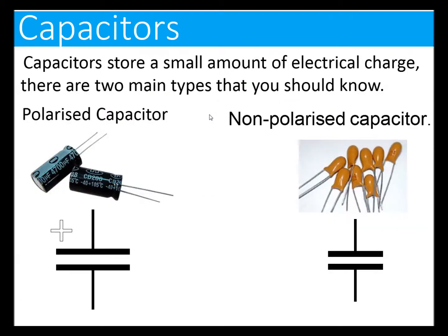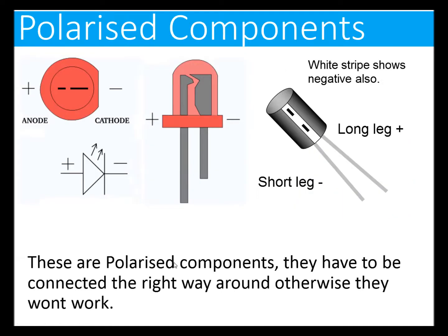Capacitors store a small amount of electrical charge. There are two main types: polarized and non-polarized — the difference is just the little plus sign on the polarized type. Polarized components are components that have a positive and a negative. For example, on an LED you've got a short leg (negative) and a long leg (positive). On a capacitor you have a white stripe indicating the negative, and also long and short legs. These need to be connected the right way around, otherwise they won't work.